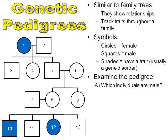If you examine this pedigree and I asked which individuals are males, the answer is individuals 2, 3, 5, 7, 10, 11, and 13 — because they're squares. Which individuals are female? Individuals 1, 4, 6, 8, 9, and 12 are females, because they're circles.